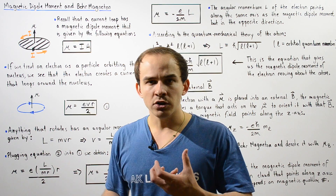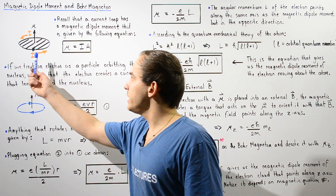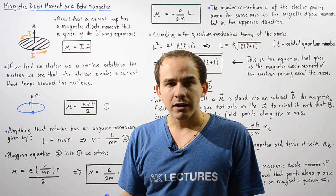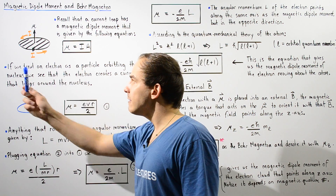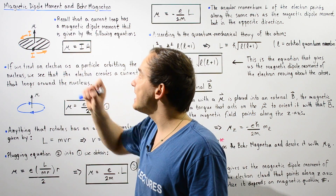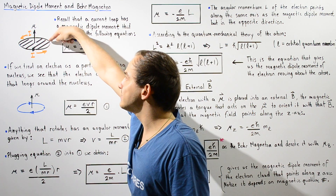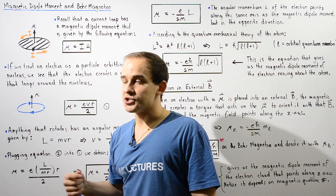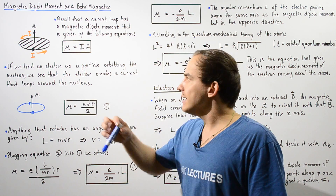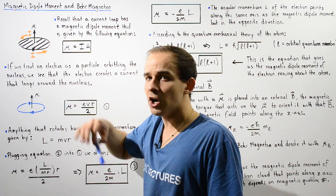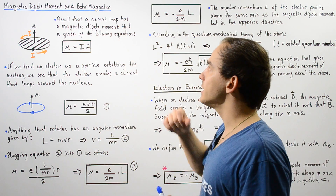Recall that a current loop forms a magnetic dipole moment given by this equation. We have a conducting loop of wire that carries a positive electric current in a counterclockwise direction, and as it travels it will form a magnetic dipole moment mu that points upward, perpendicular with respect to the area that our loop of wire encloses. If the area is given by A, then the magnitude of the magnetic dipole moment mu is given by the product of I, the current, and A, the area.